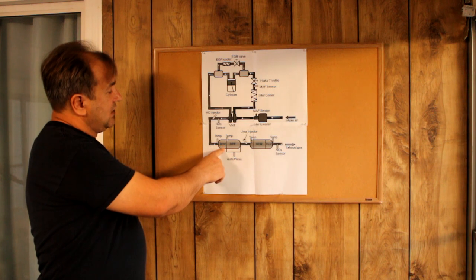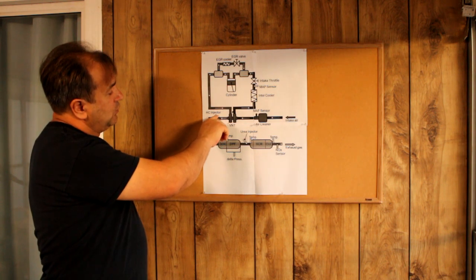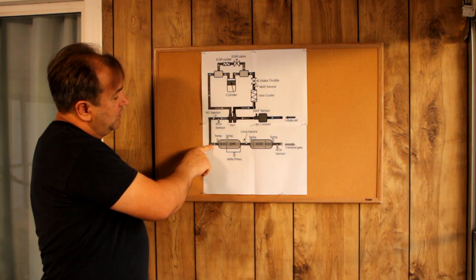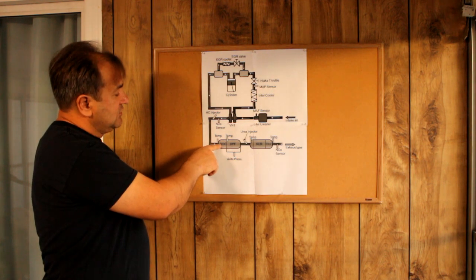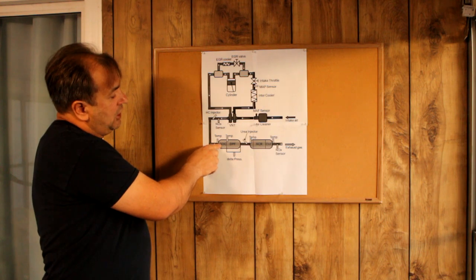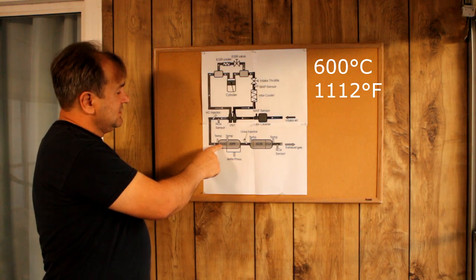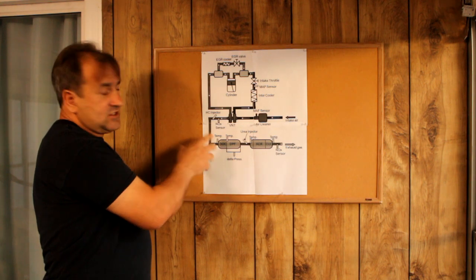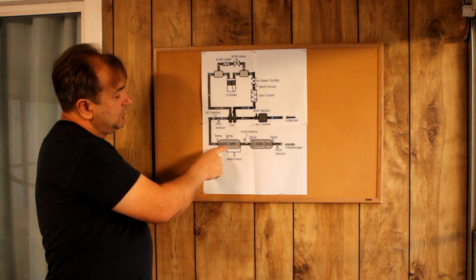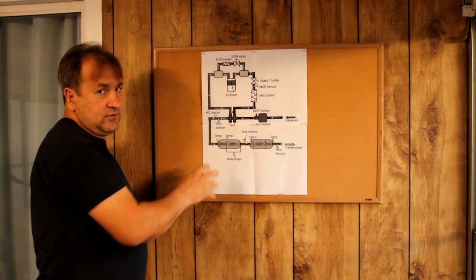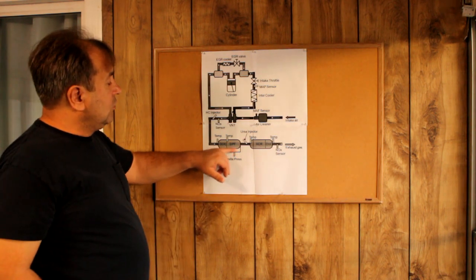After this, we need to regen to clean the filter. For this purpose we have a DOC, which is like a catalytic converter. We have an injector here with diesel fuel. When it heats the DOC, there is an explosion at pretty high temperature, about 600 Celsius. This starts to burn fuel here, and this filter gets hot and burns out all the soot.